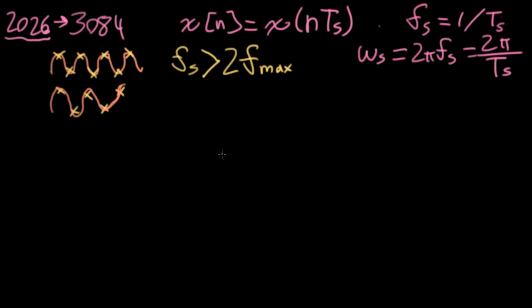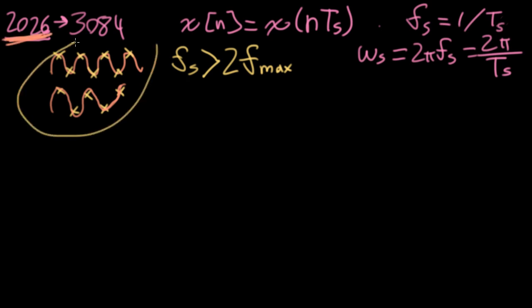We also found that if you didn't satisfy this criterion, you could get an effect called aliasing, where you might try to reconstruct the signal but you would get the wrong frequencies back. So in 2026, we did that with individual sinusoids or sums of sinusoids.